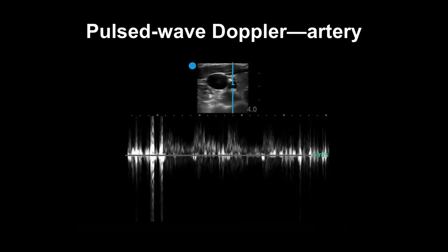Here you can see an example of pulse wave Doppler in an artery. You can see these high velocity spikes. These correlate with the pulse.